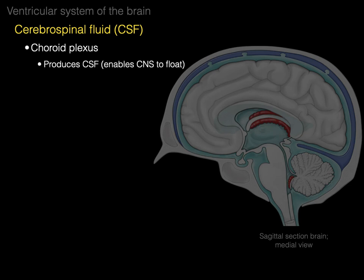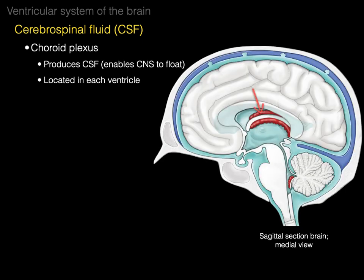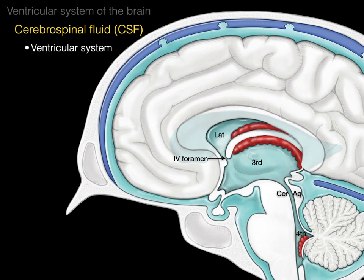The choroid plexus produces CSF — it basically filters blood plasma, so CSF has many components of plasma. This is what enables the central nervous system — the brain and spinal cord — to float. The choroid plexuses are located in each ventricle: there's the choroid plexus in the lateral and the third ventricles, and there's the choroid plexus in the fourth ventricle. CSF from the choroid plexus in the lateral ventricle flows through the interventricular foramen and joins with the CSF from the third ventricle choroid plexuses, and they all flow down the cerebral aqueduct, joining with the CSF produced by the fourth ventricle choroid plexus.